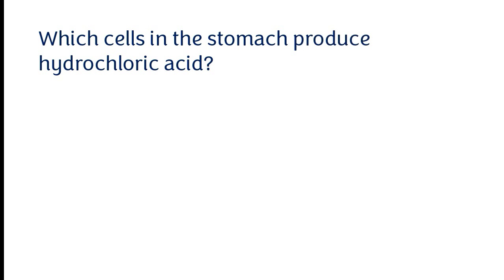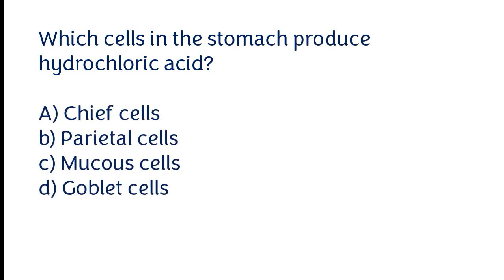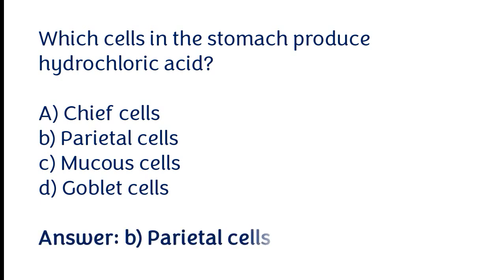Which cells in the stomach produce hydrochloric acid? Options: a) Chief cells, b) Parietal cells, c) Mucus cells, d) Goblet cells. The correct answer is option B. Parietal cells in the stomach produce hydrochloric acid.